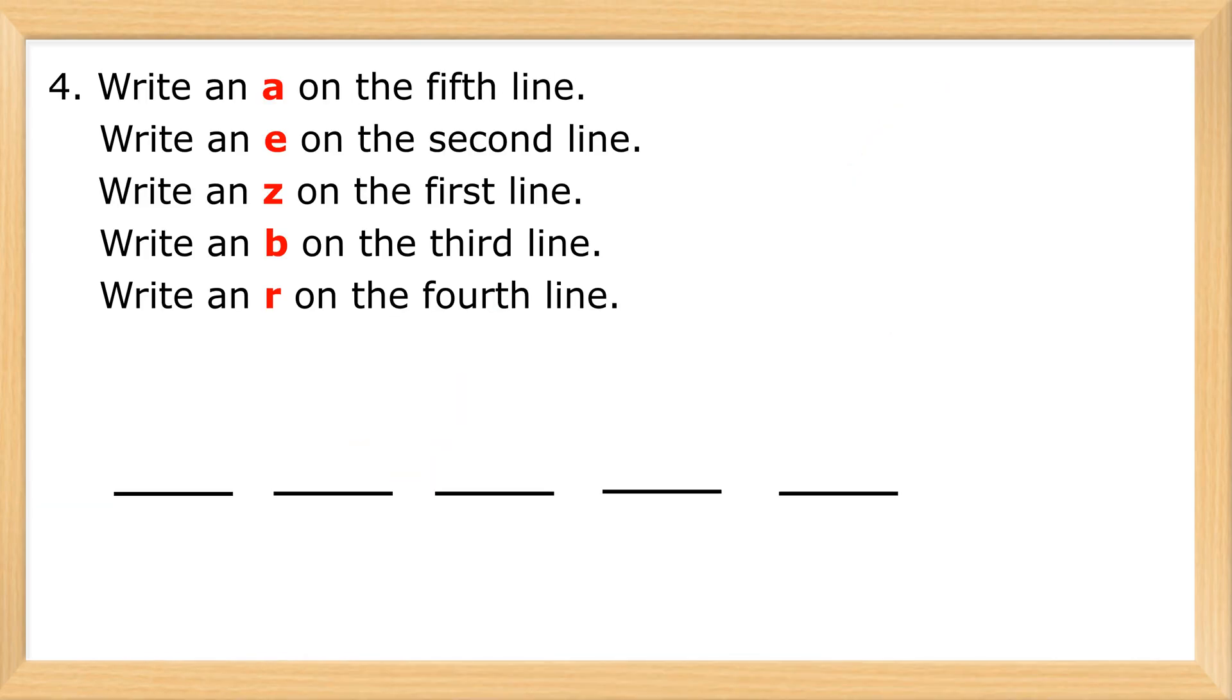Write an A on the fifth line. Write an E on the second line. Write a Z on the first line. Write a B on the third line. Write an R on the fourth line. Zebra.